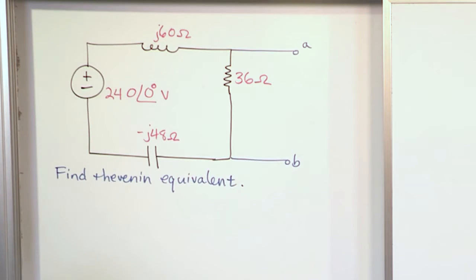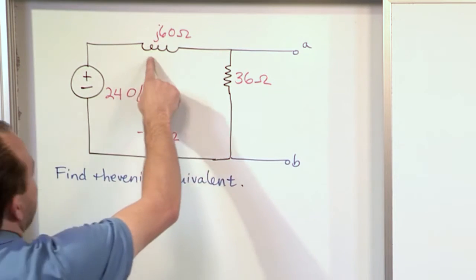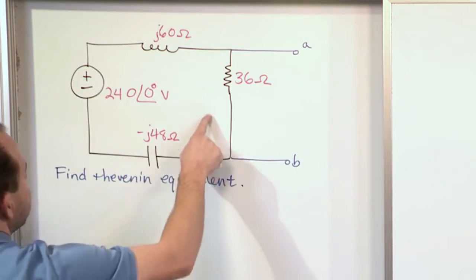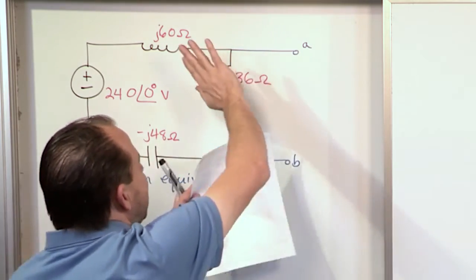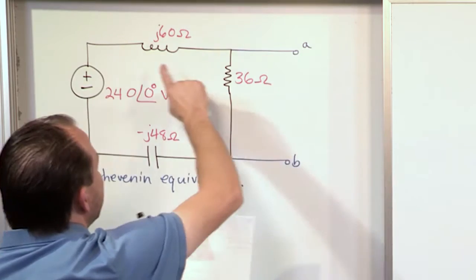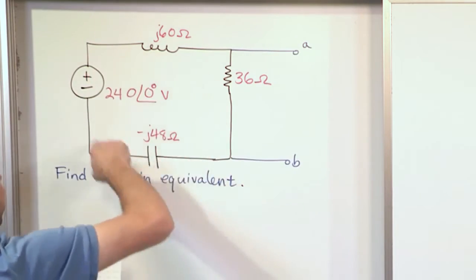Now there's many ways to proceed, but really this is such a simple circuit, you should see that essentially these are all in series with one another, all of these impedances. These terminals A and B, they're not connected to anything, so you can kind of pretend they're not there.